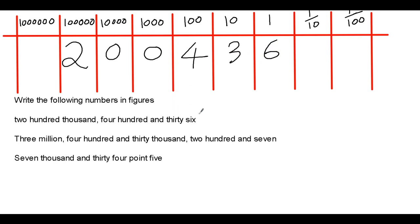So, the number should be written as 2, 0, 0, 4, 3, 6.